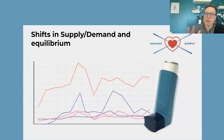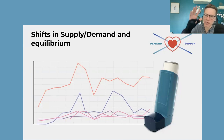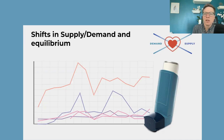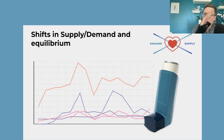So we've done the equilibrium — and I've gone through it really fast, but with the video, the questions, and the student activity sheet it'll be an appropriate amount of time. We've established the equilibrium where supply and demand cross at the equilibrium price and quantity.